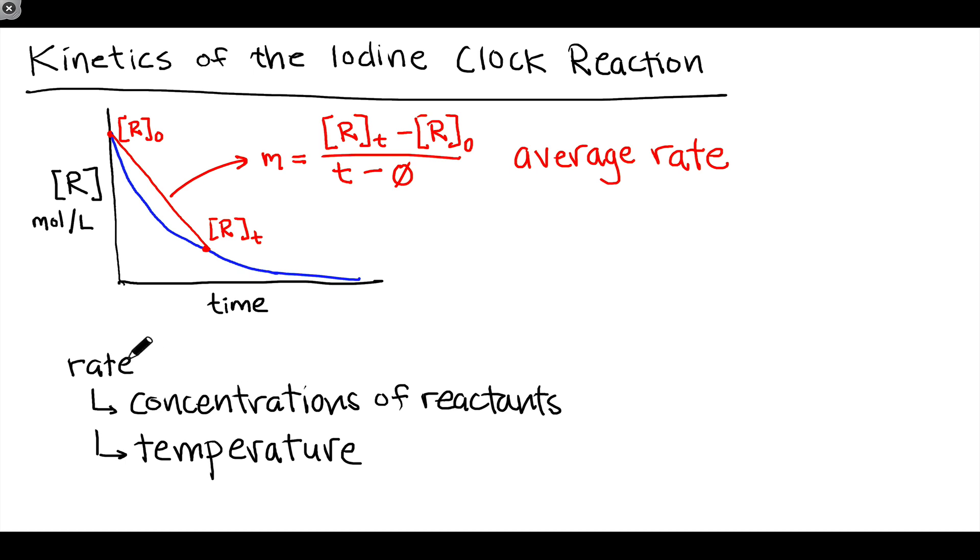We can connect the concentration dependence of the rate to the differential rate law. The rate is equal to a proportionality constant that we call the rate constant times the concentration of the reactants, let's say R, raised to some power little r. This little r power is called the kinetic order of the reaction with respect to the reactant R. This K value is the rate constant, a constant of proportionality that ensures the rate has units of concentration per time.